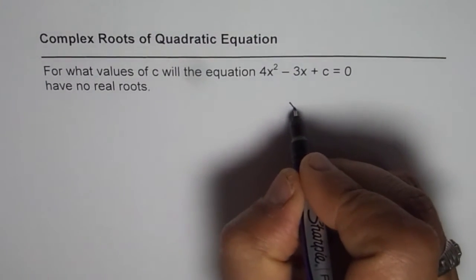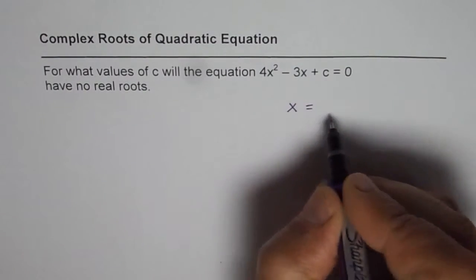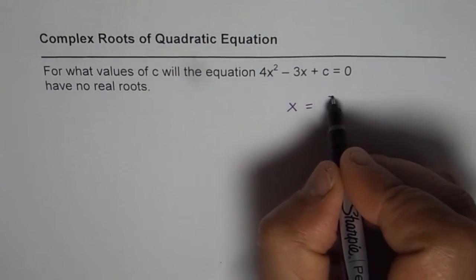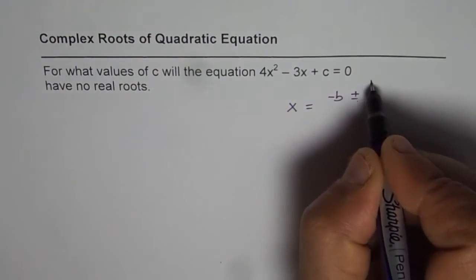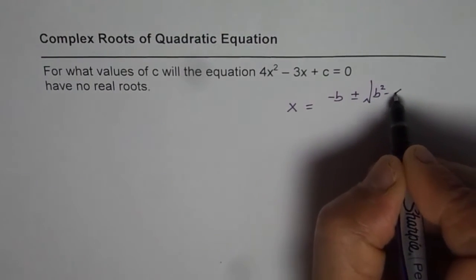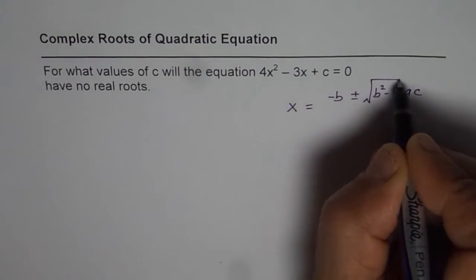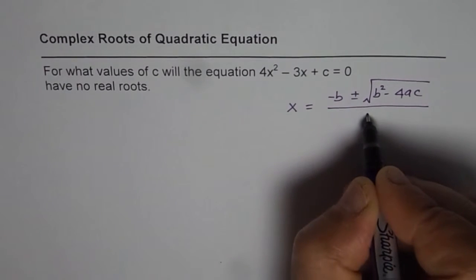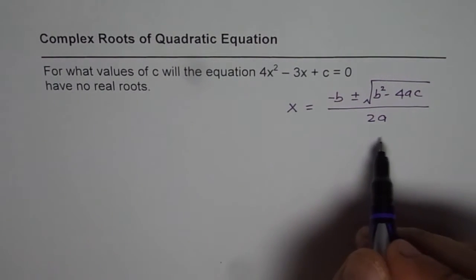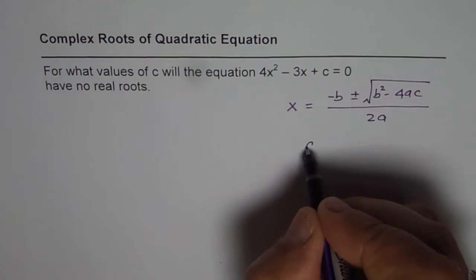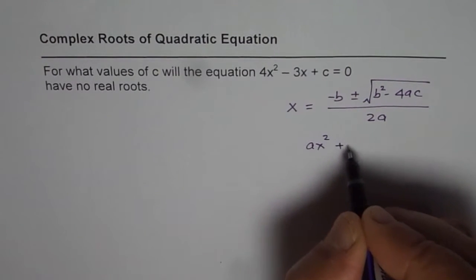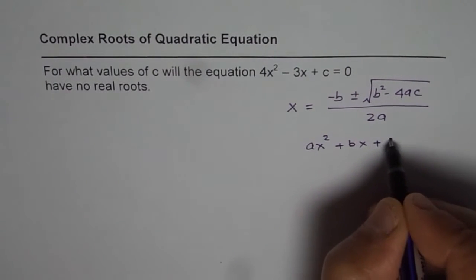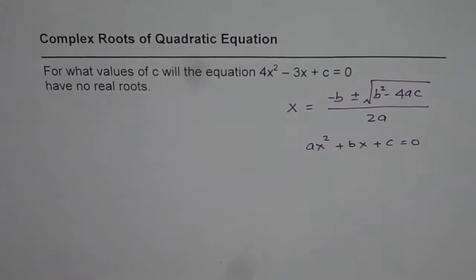Roots of any quadratic equation can be found using the quadratic formula: x = (-b ± √(b² - 4ac)) / 2a, where a, b, c are the coefficients of the quadratic equation, normally written as ax² + bx + c = 0 in standard form.